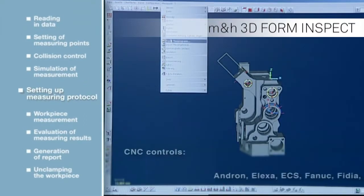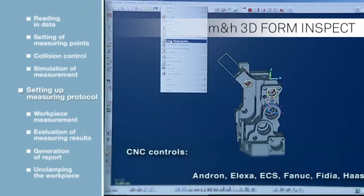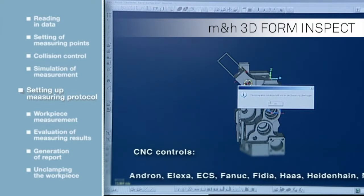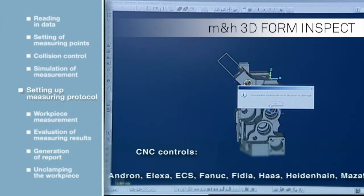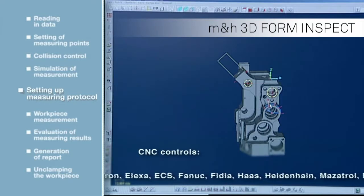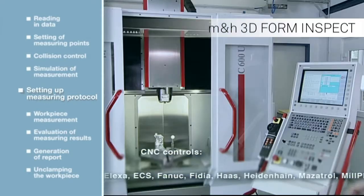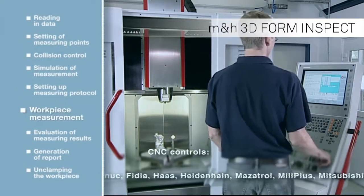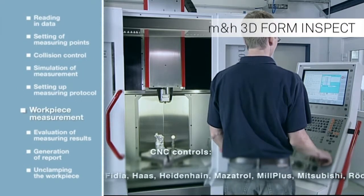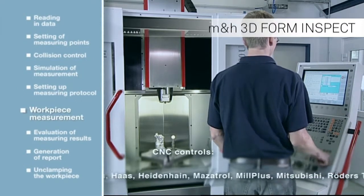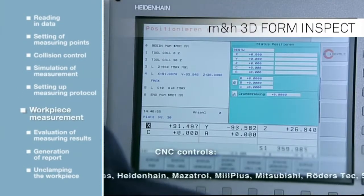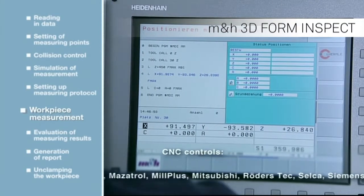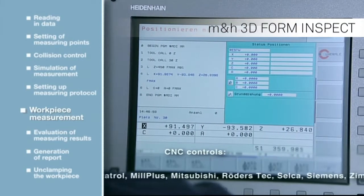The measuring program is transferred to the CNC control. Post processors are available for Andron, Alexa ECS, Fanuc, Fidia, Haas, Heidenhain, Mazatrol, Millplus, Mitsubishi, Roeders Tech, Selka, Siemens, Zimmer and Crime, and Z32.